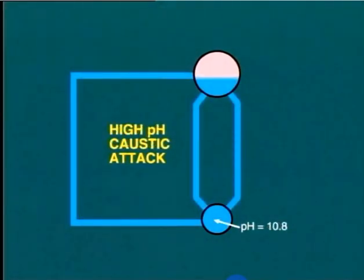Caustic attack, which occurs when the alkalinity of the boiler water is too high. The pH level is above about 10.5.